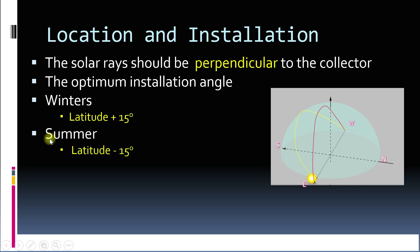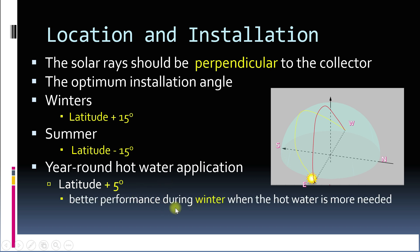If you need hot water in summer, the angle should be latitude minus 15 degrees. For year-round use, which may be a requirement for industries or hotels that need hot water all year, the angle should be latitude plus 5 degrees. This angle ensures better performance in winter when hot water demand is usually higher.